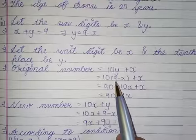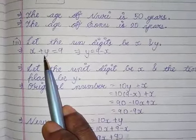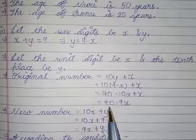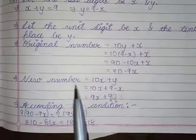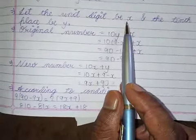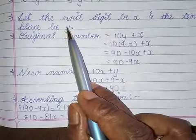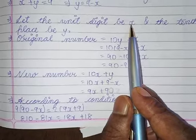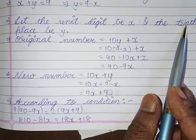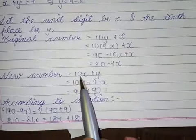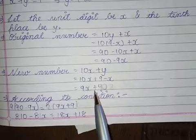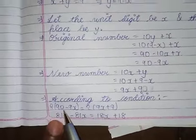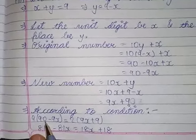Since y equals 9 minus x, the original number becomes 90 minus 9x. Reversing the digits: the unit digit x goes to the tens place giving 10x, and tens digit y goes to the unit place giving y. The reversed number is 10x plus y, which equals 9x plus 9 after substituting y. According to the condition, 9 times the original number equals twice the reversed number.